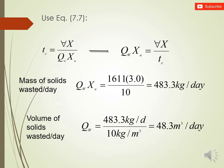We can also calculate the volume of solids wasted per day by dividing Q_W·X_U by X_U, where X_U = 10,000 mg/L (i.e., 10 kg/m³). Dividing 483.3 kg/day by 10 kg/m³ gives 48.3 m³/day — the volumetric flow of wasted sludge.